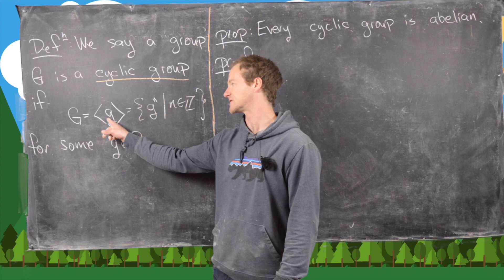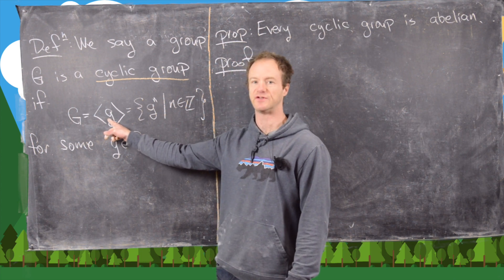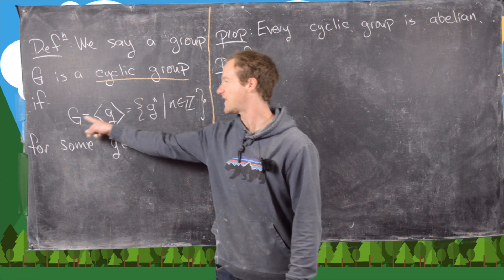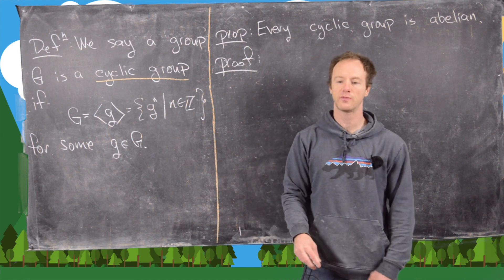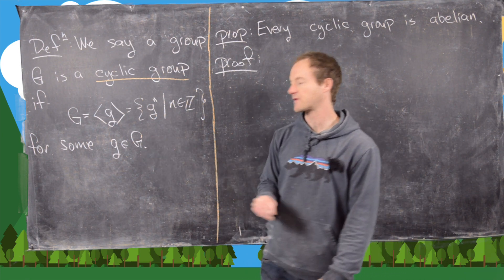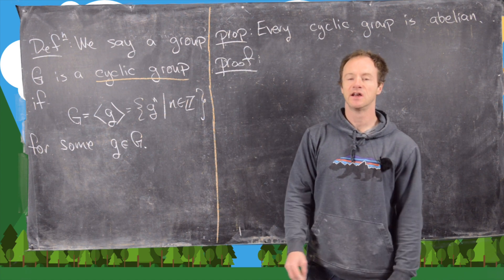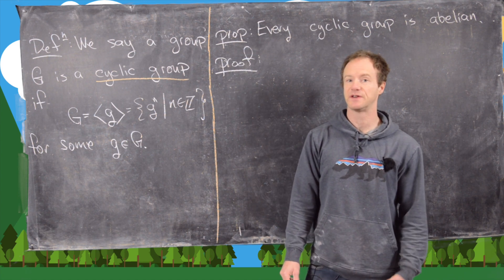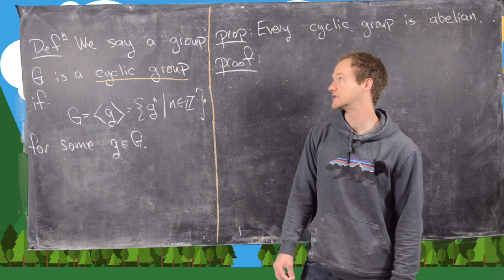We generally write it like that, so notice that's the cyclic subgroup of G generated by g, and if that coincides with the whole group then we say that whole group is cyclic. Here I'm saying for some g in G, and in fact a group can have a bunch of different generators depending on its structure.